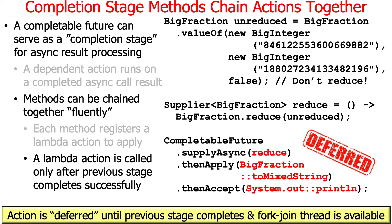You can basically think of these actions passed as parameters to CompletableFuture methods as being deferred until the previous stage completes and the appropriate thread is available to perform the operation in the background. There are also various ways that thread selection happens.